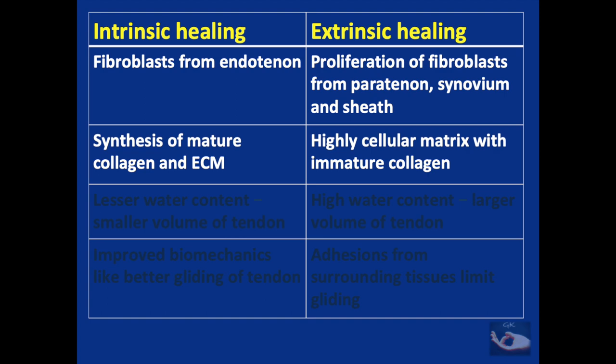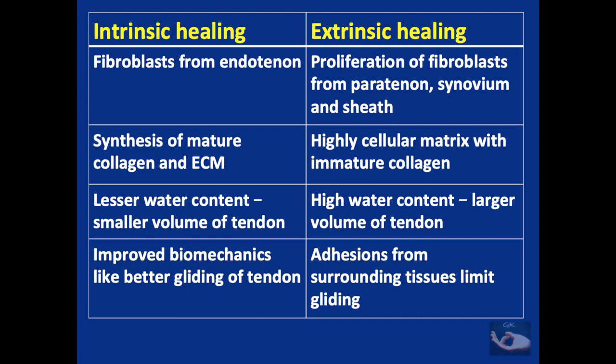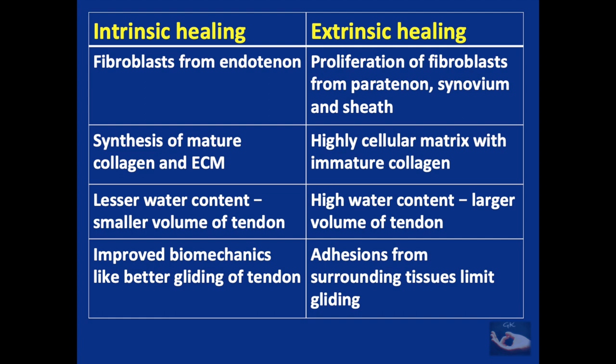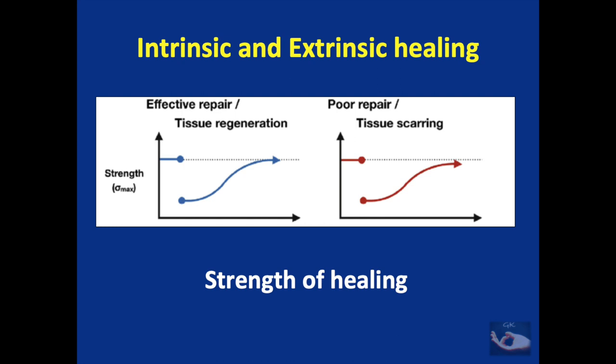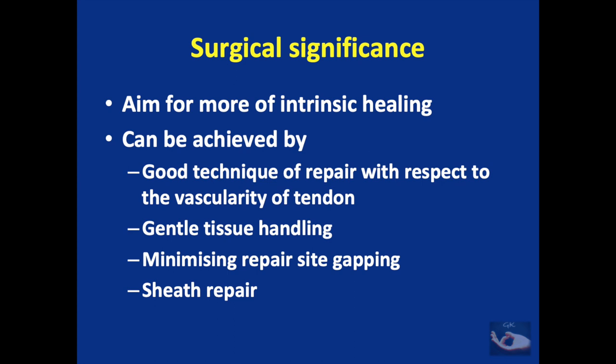Fibroblasts from the endotenon are responsible for intrinsic healing, while proliferation of fibroblasts from the paratenon, synovium, and sheath drive the extrinsic process. Intrinsic healing produces mature collagen and extracellular matrix, whereas extrinsic healing yields a highly cellular matrix with immature collagen type 3. Intrinsic healing has less water content, resulting in a smaller tendon volume and improved biomechanics — better gliding — while additions from surrounding tissues limit gliding after extrinsic healing. The strength of healing is similar in both, but the cross-sectional area is much higher and the elastic modulus much lower in extrinsic healing. Surgically, we must aim for more intrinsic healing through good repair technique, gentle tissue handling, minimizing gapping, and ensuring sheath repair.